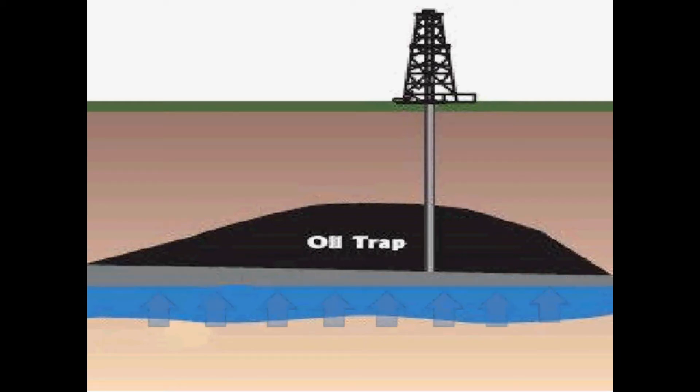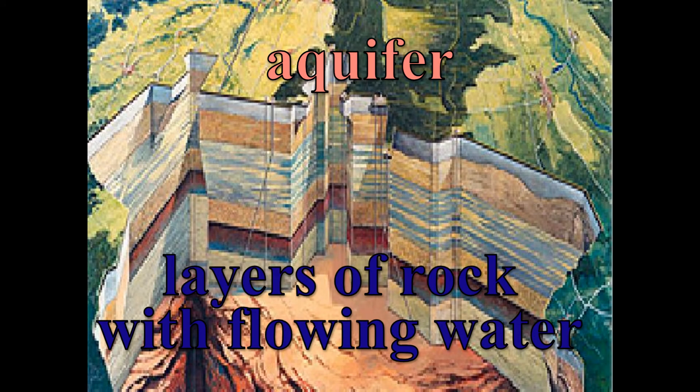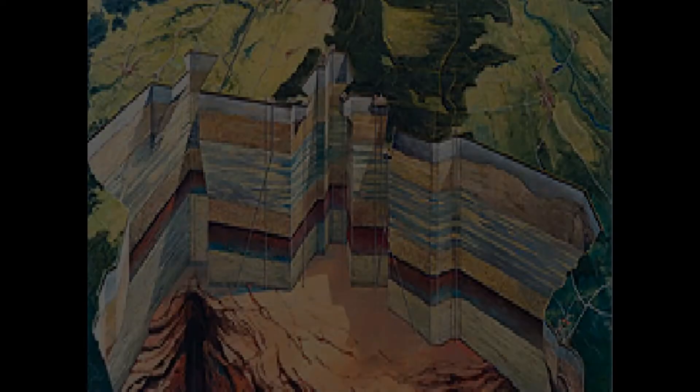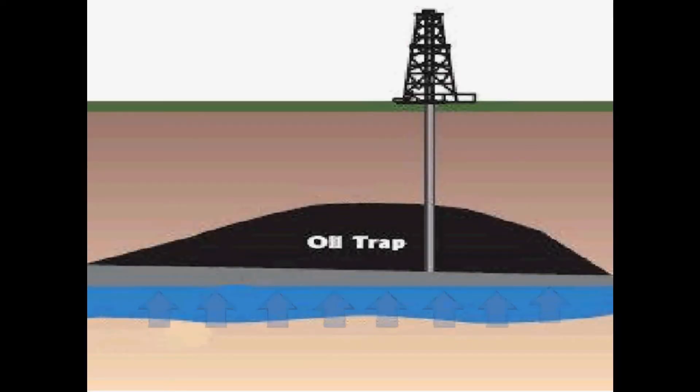In reservoirs with access to aquifers, an aquifer is a layer of earth or rock containing water that can flow and pass through it. The water is used to maintain pressure by replacing all the volume of oil that is produced.